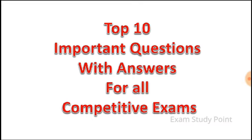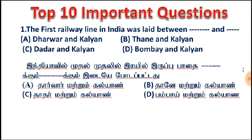From the first question, you will see four options. Option A: Tharwar matrum Kalyan. Option B: Thane matrum Kalyan. Option C: Thadar matrum Kalyan. Option D: Bambay matrum Kalyan.